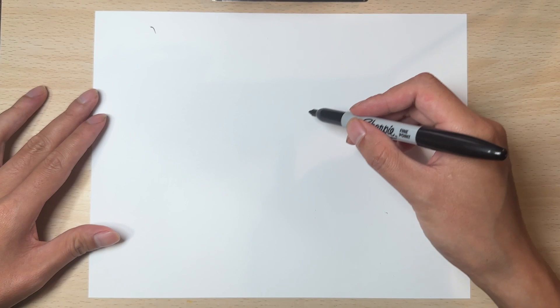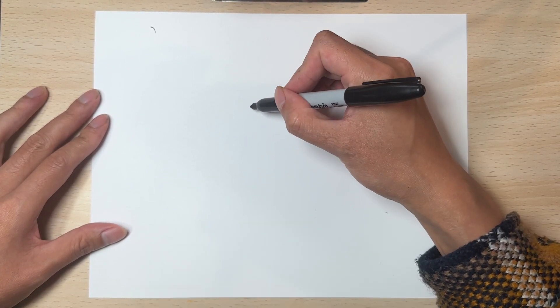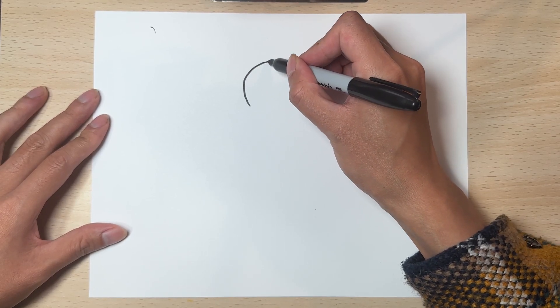Let's start off with the head right around here. Draw a medium-sized circle right around here like so.